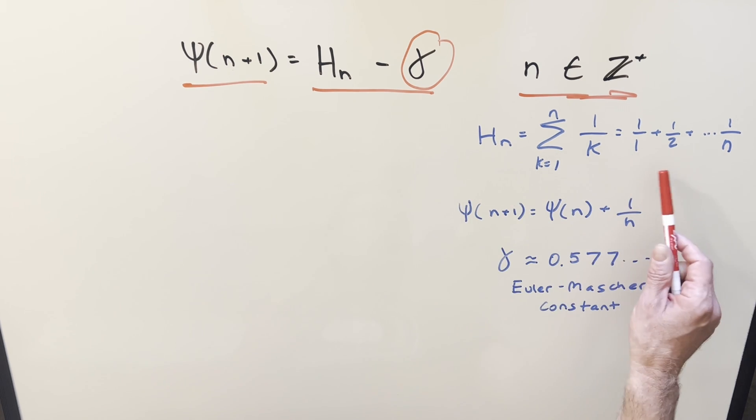So if n is 3, let's say you're going to have 1 over 1, 1 over 2, and the last term is going to be 1 over 3.